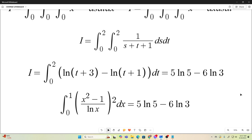So in the end, we get this, that the integral from 0 to 1 of x squared minus 1 over natural log x all squared dx is equal to 5 natural log 5 minus 6 natural log 3. All right, guys, that's it. Hope you enjoyed that. We'll see you next time.